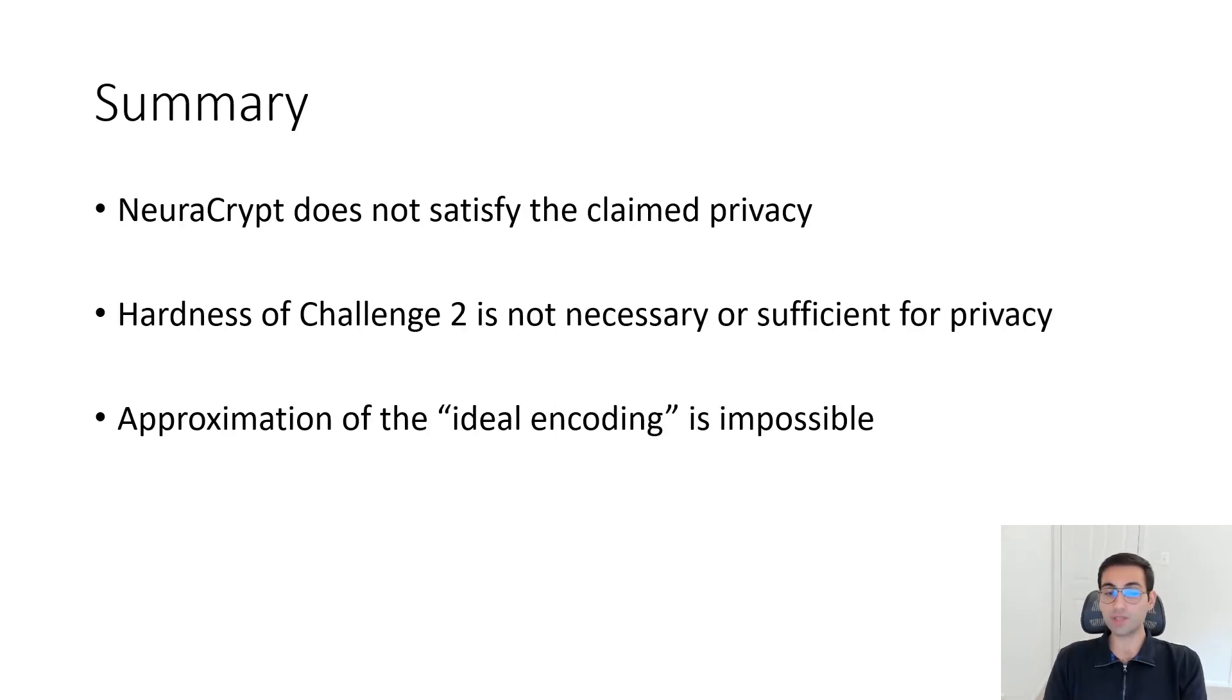To summarize, what we showed is that NeuroCrypt is not private as it doesn't satisfy the privacy definition of the first challenge. We showed that their second challenge is not necessary or sufficient for privacy. And we also showed that any approximation of the ideal encoding is impossible. That's it. Thanks.